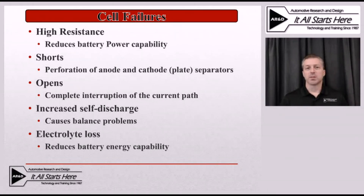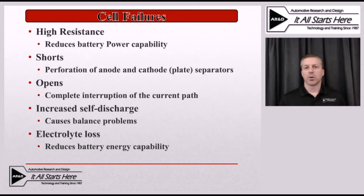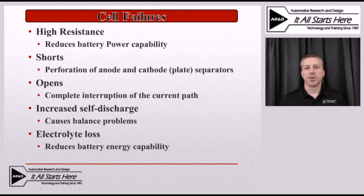Another failure mode is shorts. This is where we have a perforation between the anode and cathode separator plate. A battery has a positive and negative plate with a separator that keeps them from coming in contact. If that separator becomes perforated or has a hole in it, we start to have a short — a very low resistance path for current to move within the cell itself rather than exiting the cell between its terminals. This can be caused by cell structure changes and dendrite growth. An open circuit is where we no longer have the capability to flow current from a battery cell or module assembly, and an open circuit is an unrepairable event within a battery module or cell.